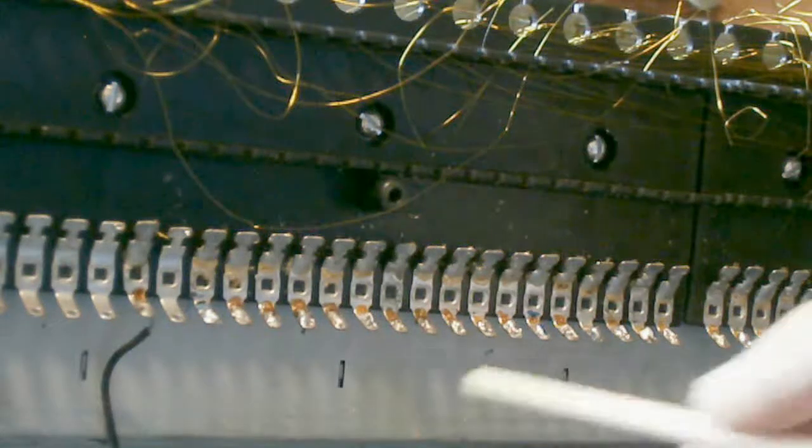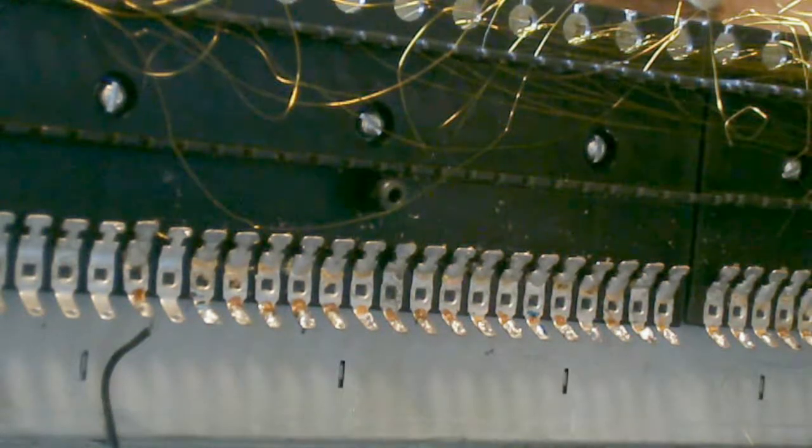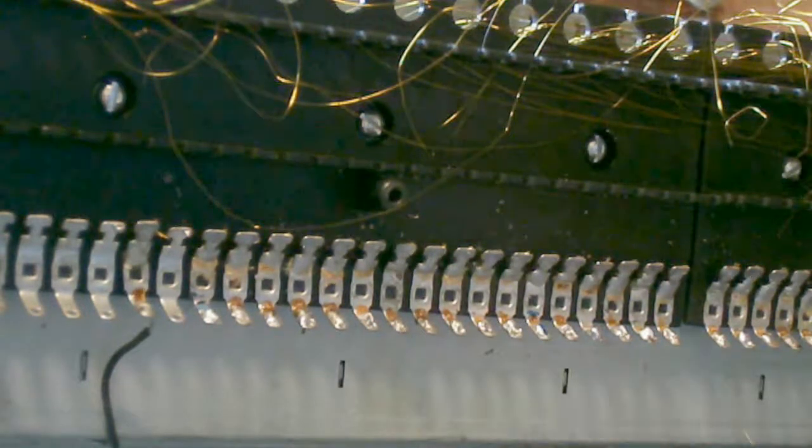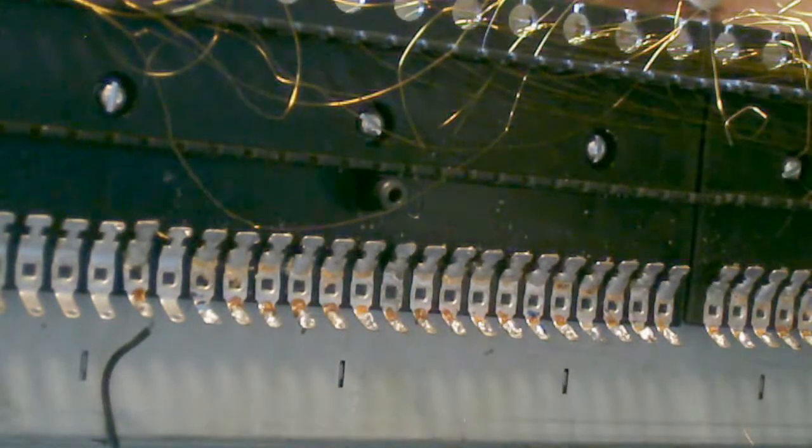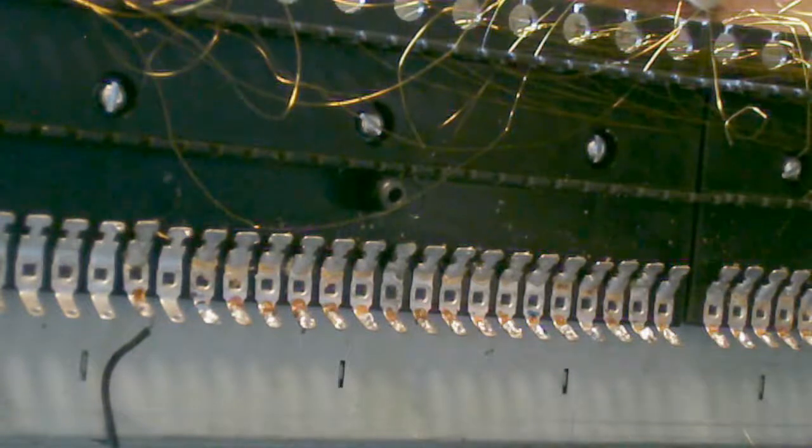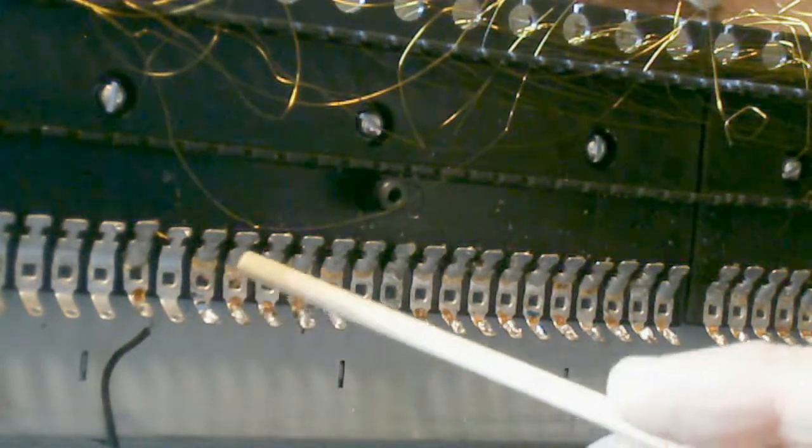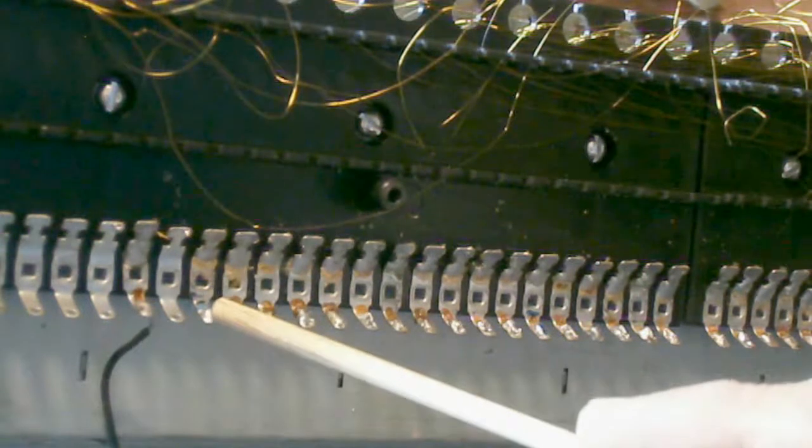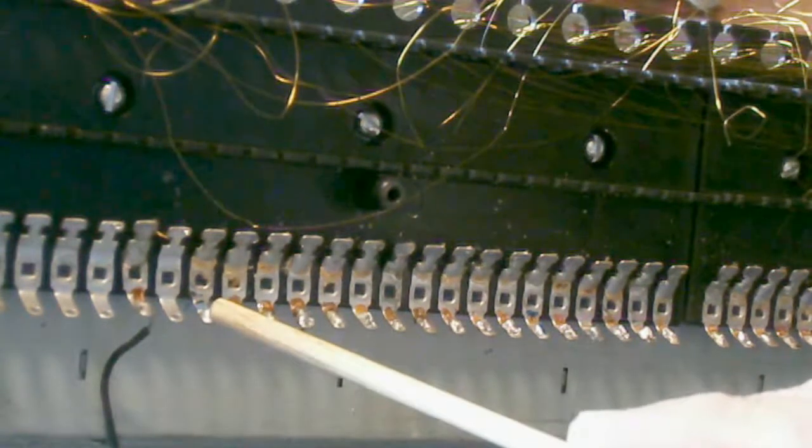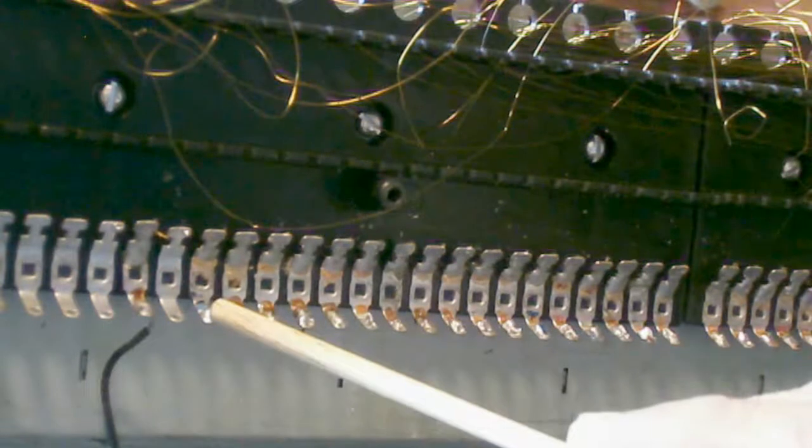Now we're going to look at the terminal strip. That's where the contact wires are going to be soldered. Where are the tones? This is the F sharp, it's the highest one.